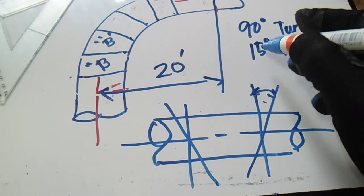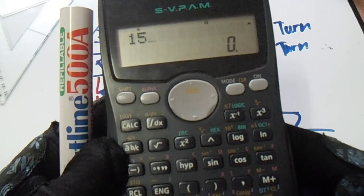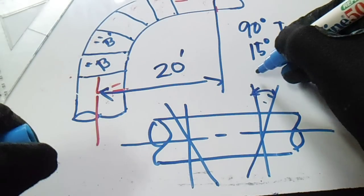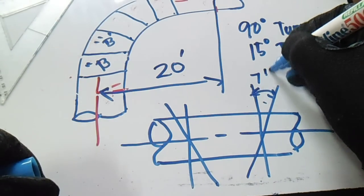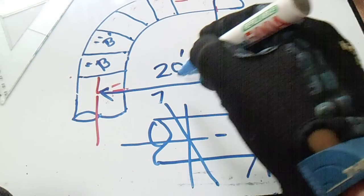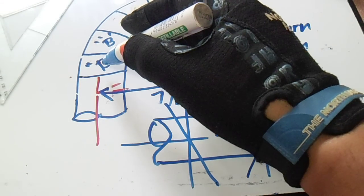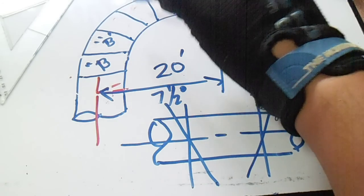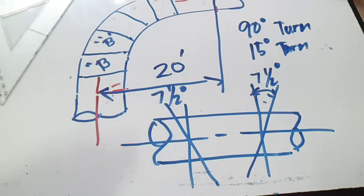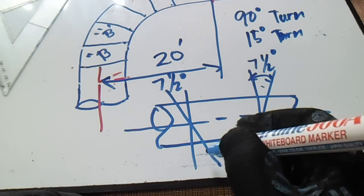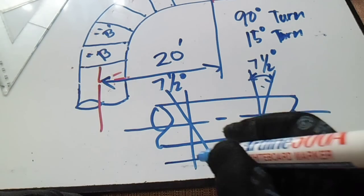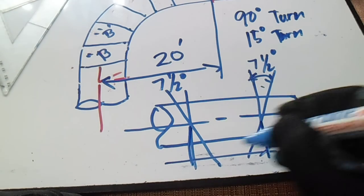To get this angle, just divide this 15 degrees by two. So 15 degrees divided by 2 equals 7.5 degrees, or seven and a half degrees. This is also 7.5 degrees. So all these dimensions, we have 7.5 degrees.